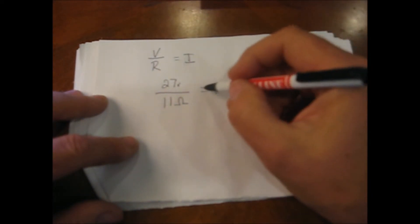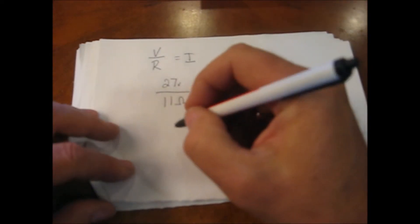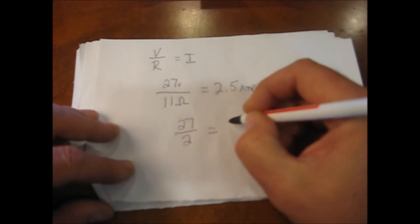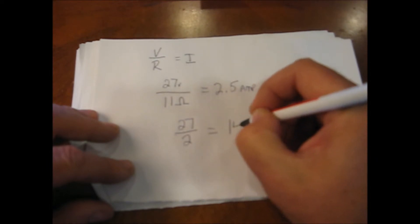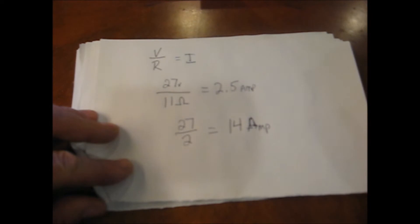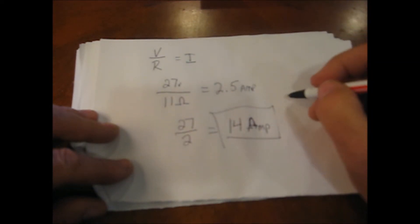If we had a short on there and maybe we're getting 2 ohms, what we might have is 27 divided by 2. And now we're looking at almost 14 amps. And that my friend will blow those little fuses in your furnace left and right all day long.